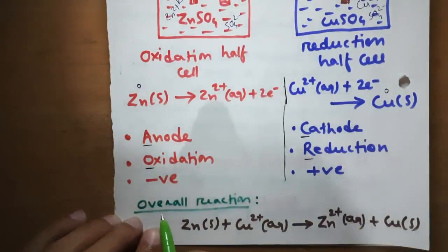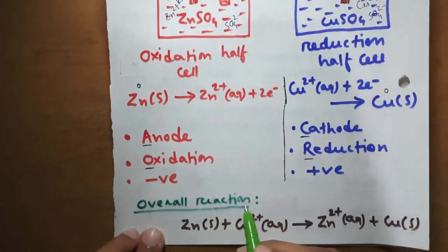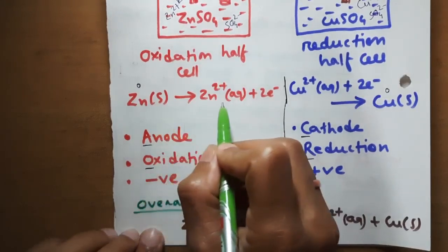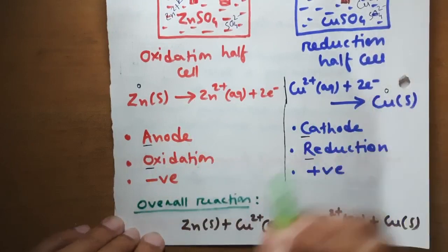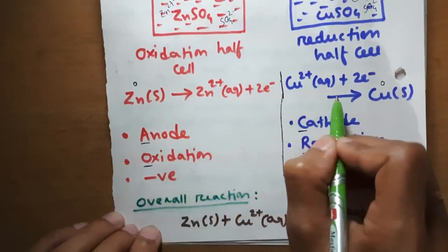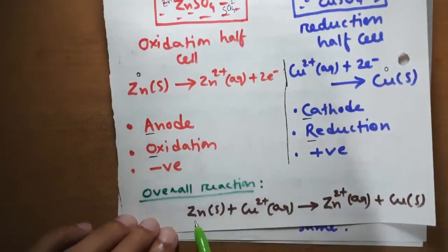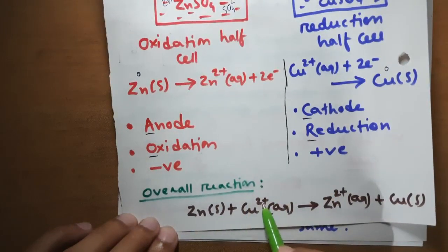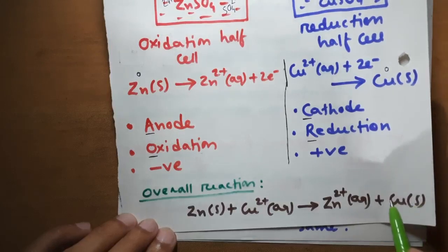Now we can determine the overall reaction taking place in this cell by combining the oxidation half cell reaction and the reduction half cell reaction. Adding these two reactions gives the overall reaction: Zn(s) + Cu²⁺(aq) → Zn²⁺(aq) + Cu(s). This is the overall reaction of the Daniel cell.